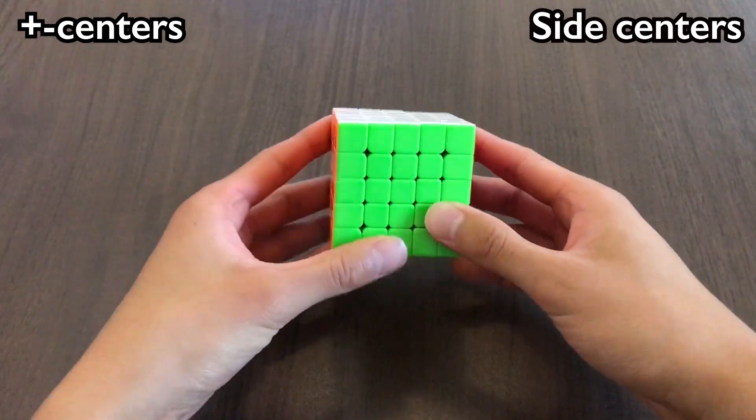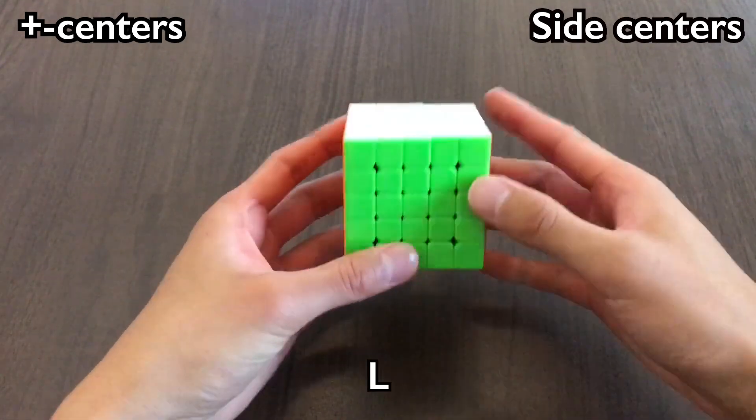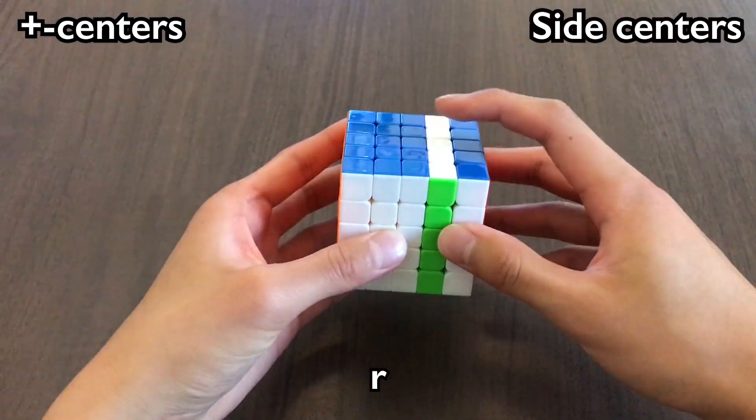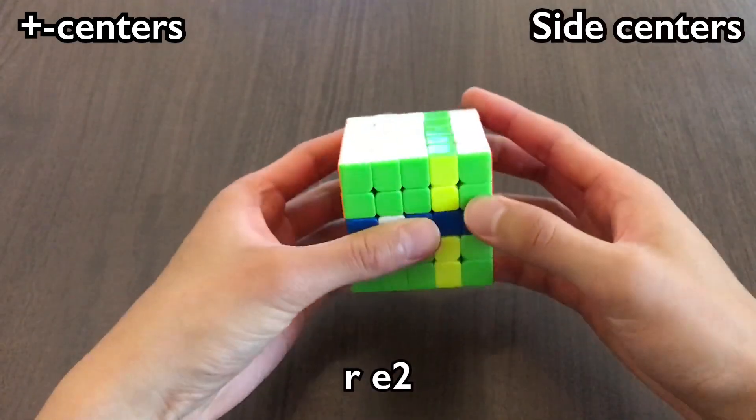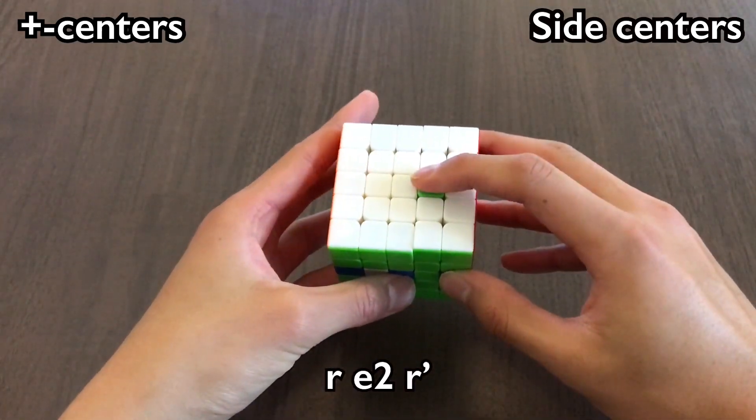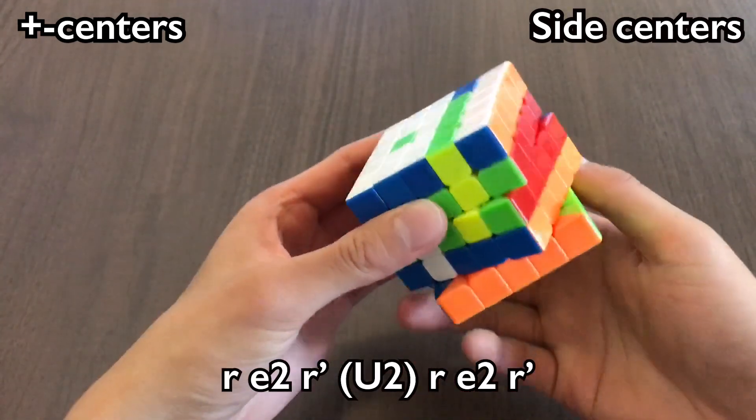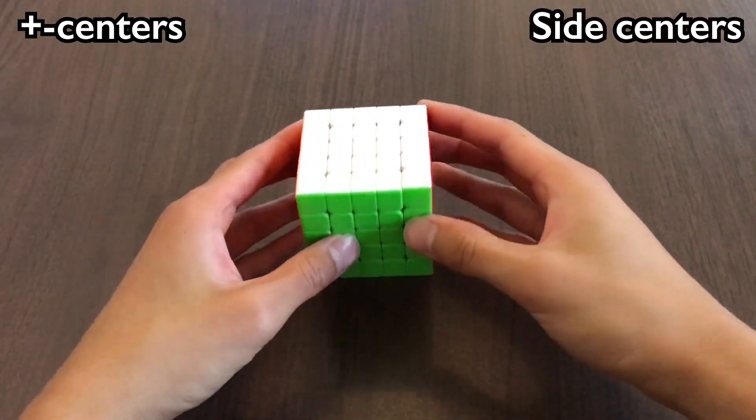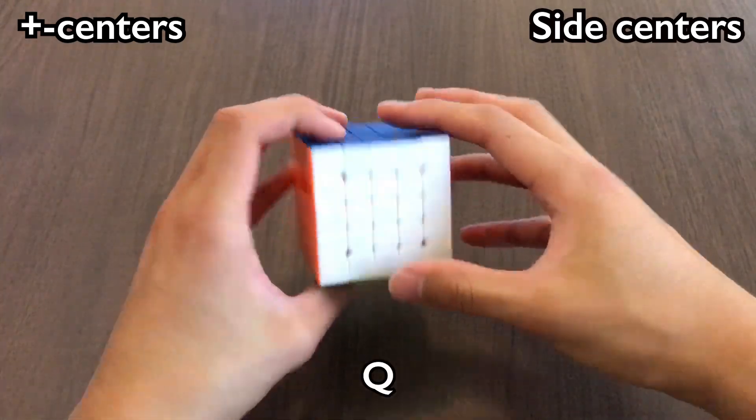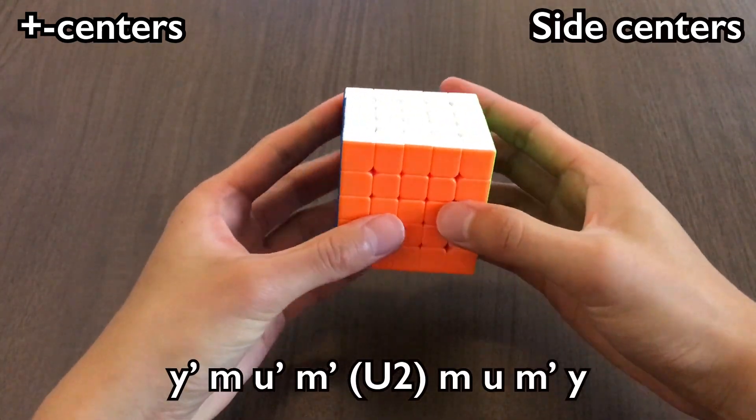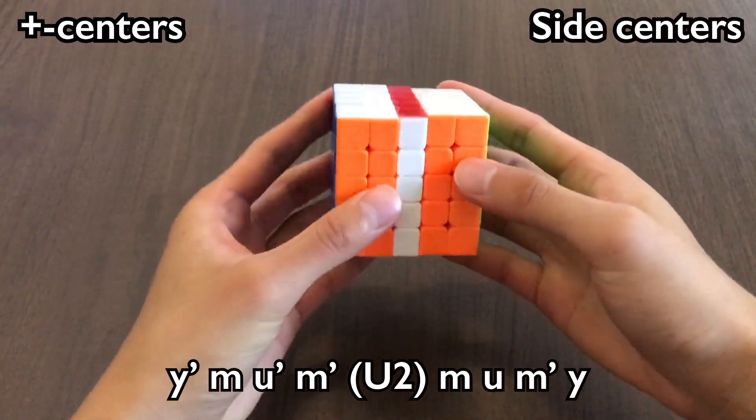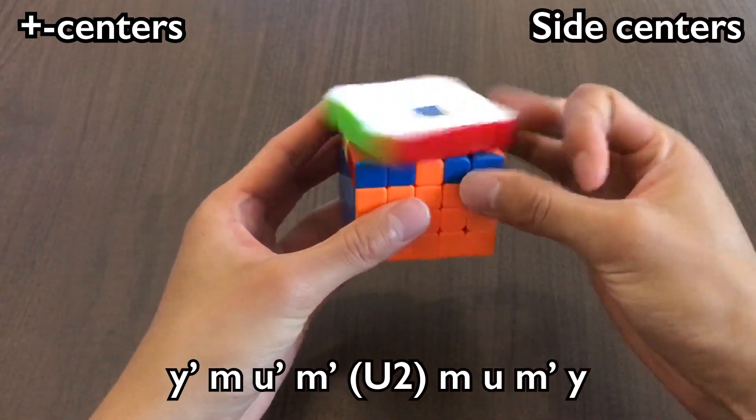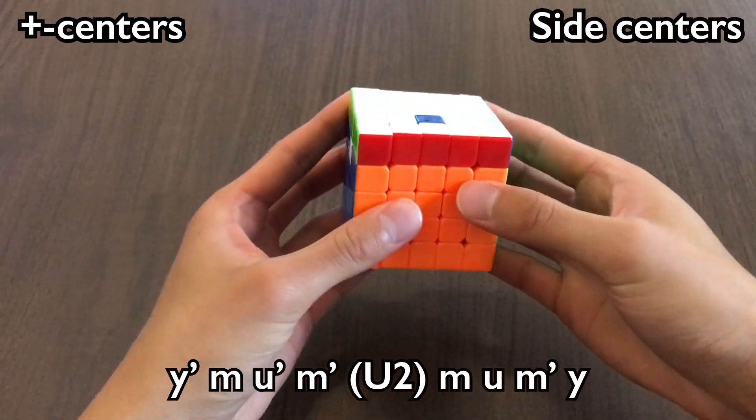First, let's take a look at side centers. If we want to shoot to this center, L, we can do an R, which puts our target sticker over here, E2, R' which inserts our sticker here, do a U2, and then undo the setup. Sometimes we have to rotate, like if we have Q, we can do a Y' and M puts us in position to insert the center, do a U2, then undo the setup, and rotate back.